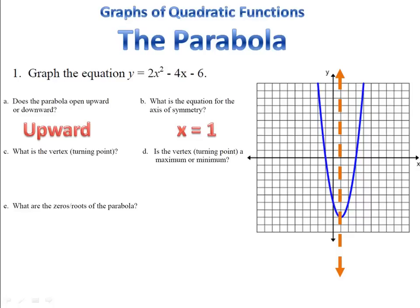Next we're looking for the vertex, the turning point of the parabola. That's this spot right down here at the bottom. The coordinates of that point are (1, -8).